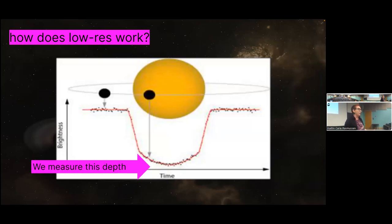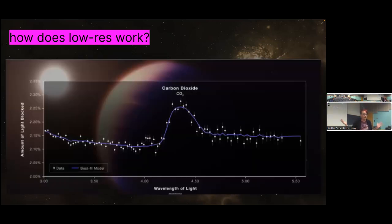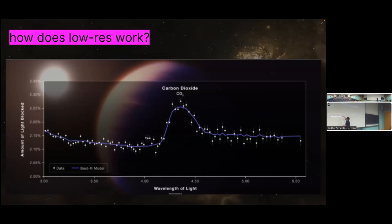We measure the depth of this light curve — the transit depth is the data point that becomes part of the spectrum. With this really cool carbon dioxide detection on WASP-39, it was actually on Times Square — I never thought I would ever see an exoplanet spectrum up in New York Times Square. What we see is that we have a nice feature, and counter-intuitively, the more light it blocks, the higher the point is. Because we have a big transit depth in the feature where carbon dioxide lives, we know that carbon dioxide is in that planet for sure.